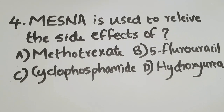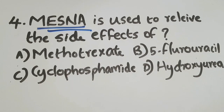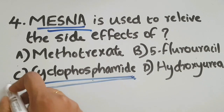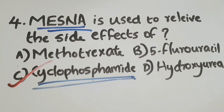Fourth question: mesna is used to relieve the side effects of — option A: methotrexate, option B: 5-fluorouracil, option C: cyclophosphamide, and option D: hydroxyurea. Mesna is a drug mainly used to reduce the risk of bleeding in the bladder — called hemorrhagic cystitis — a very serious side effect of cyclophosphamide. The correct answer is option C: cyclophosphamide.